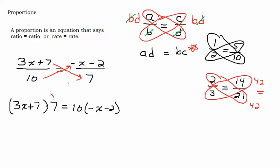So from here, it should be pretty easy to solve, hopefully. We're going to distribute that seven, and we're going to distribute this ten. Let's see what we get. 21x plus 49 equals negative 10x minus 20.